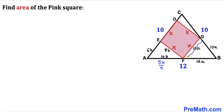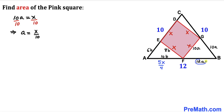Next, focusing on side FG: it equals 10A and also equals X, so 10A = X. Dividing both sides by 10 gives A = X/10. Substituting into the expression 12A: 12 × (X/10) = 12X/10, which simplifies to 6X/5. So 12A is replaced by 6X/5.